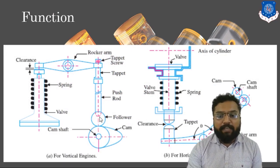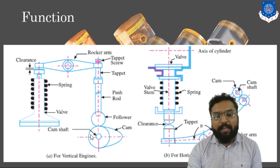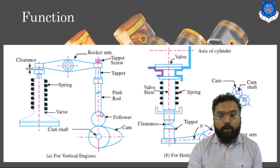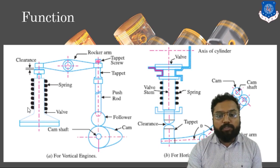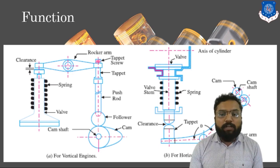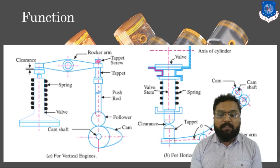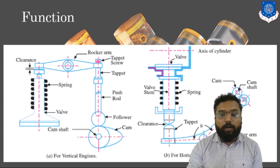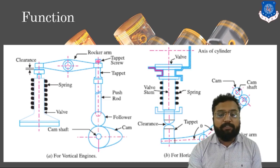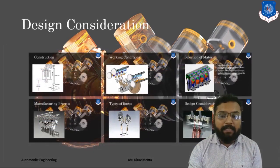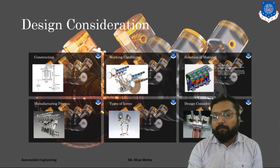In the case of the vertical engine, you can see this is a cam which is connected to our valve timing belt, which is connected to a follower. This follower is directly connected to the tappet, and ultimately through the rocker arm, it will provide motion to the valve, which is opened and closed by the camshaft. The camshaft is directly connected to the timing belt, which provides different types of motion at the exact time of fuel inlet and fuel outlet.